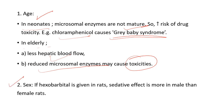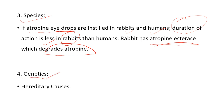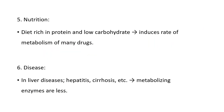The second factor is sex. If hexobarbitone is given to rats, the sedative effect is more in male than female rats. The third factor is species: if atropine eye drops are instilled in rabbits and humans, the duration of action is less in rabbits than in humans, because rabbits have atropine esterase which degrades atropine. Next is genetics — hereditary causes. The fifth factor is nutrition: a diet rich in protein and low in carbohydrates gives an increased rate of metabolism of many drugs.